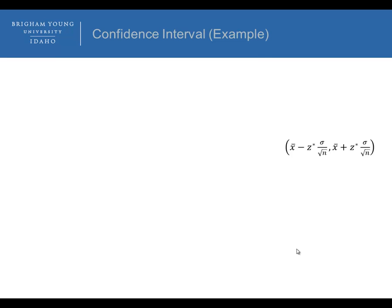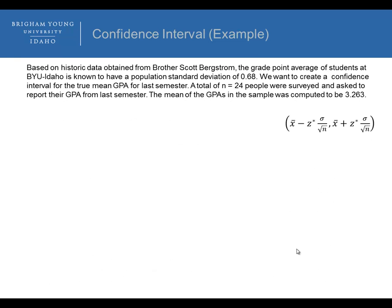Now let's go through an example. Based on historic data, the grade point average of students at BYU-Idaho is known to have a population standard deviation of 0.68. We want to create a 95% confidence interval for the true mean GPA for last semester. A total of 24 people were surveyed and the sample mean GPA was 3.263. The point estimate for the true mean GPA is simply our sample mean: 3.263.